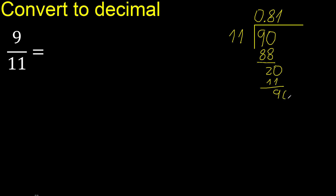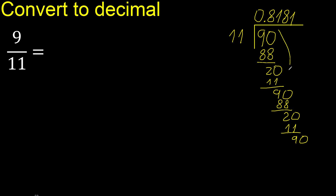Always complete with 0. 90 — 11 multiplied by 8, subtract, complete. 20 — 11 multiplied by 1, subtract, complete. Here it repeats, therefore repeat.